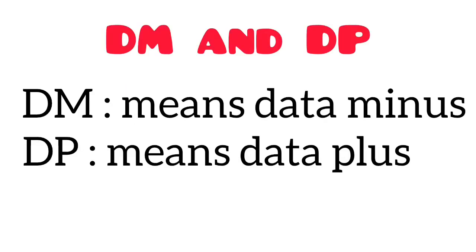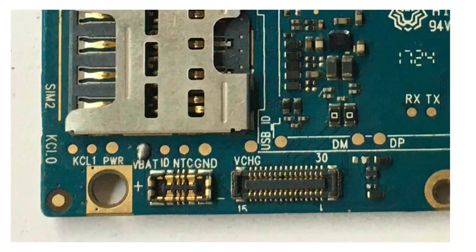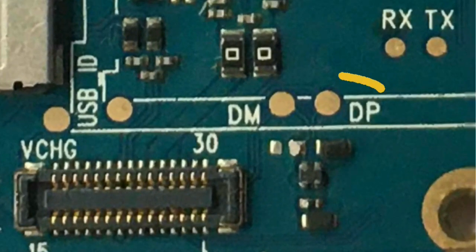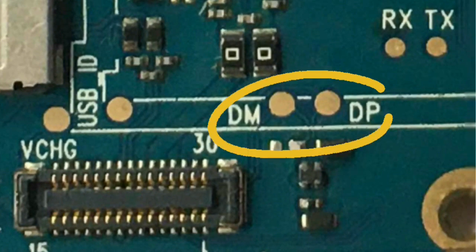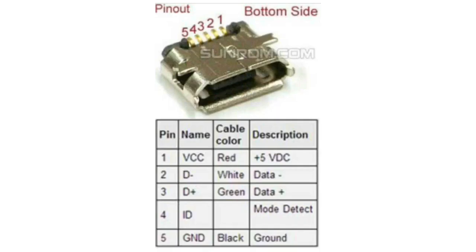Next, we have the DM and the DP. The DM means data minus, and the DP means data plus. This is the identification on the logic board — the DM and the DP. As you can see from the configuration on this charging port, the DM is data minus, which is number 2 on the charging port, while the DP is data plus.